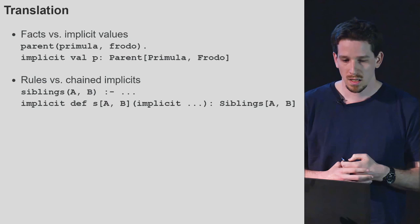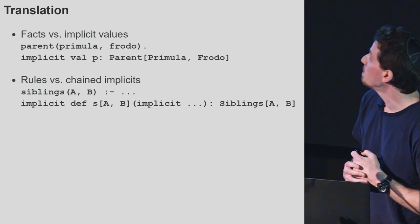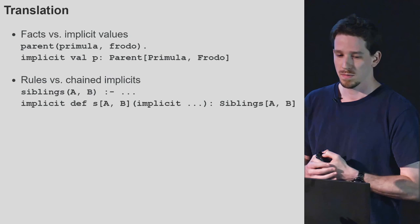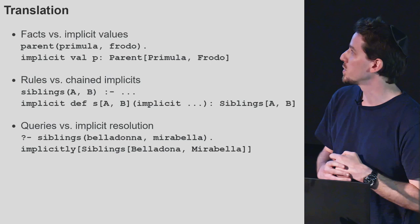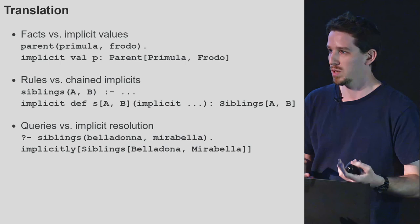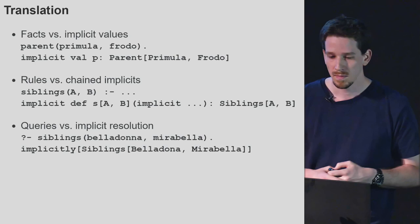Rules become chained implicits — to prove that A and B are siblings, we need to know something about A and B implicitly, because we need it at compile time. Now that we have both facts and rules, we can query them. The equivalent of querying the Prolog REPL is asking for implicit resolution. When we ask the compiler for an implicit value, it will force the compiler to go over all the known implicits and come up with an answer, just like in Prolog.